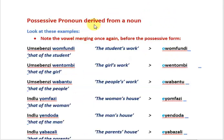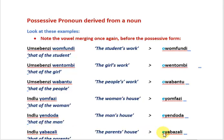The possessive pronoun derived from a noun: here we are using a noun in the possessive form, and on the right again is the possessive pronoun. Note once more the highlighted vowel and the initial vowel of the noun. 'Umsebenzi womfundi' — the student's work; 'owomfundi'. 'Umsebenzi wabantu' — the people's work; 'owabantu'. 'Indlu yomfazi' — the woman's house; 'eyomfazi'. 'Indlu yabazali' — the parents' house; 'eyabazali'.